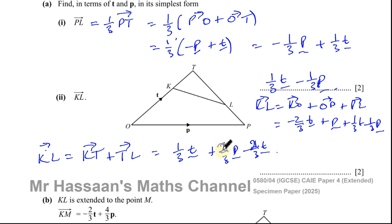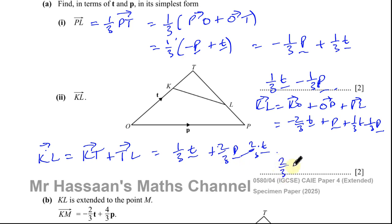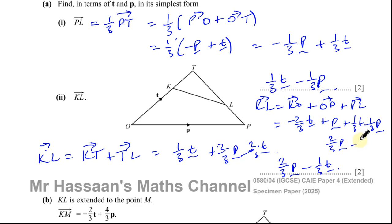That was supposed to be minus two thirds t. So here we have a third minus two thirds t, which gives minus one third t. And you have p minus one third p, which is two thirds p. And minus two thirds t plus one third t gives minus one third t. Same answer either way.